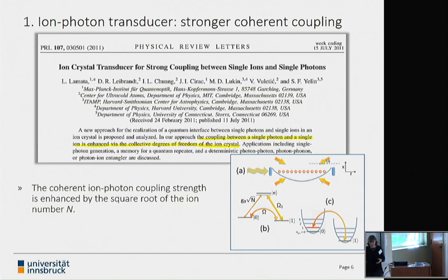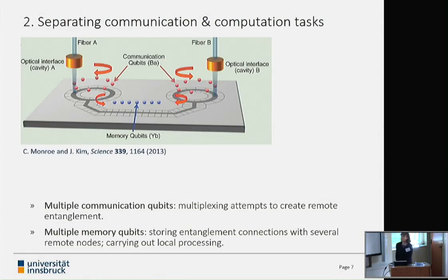One reason you would want to enhance this coupling, for example, if you're using the system to generate single photons. There's a paper from Alexei and his group some years ago talking about the maximum efficiency with which you can use such a system to generate these photons. This goes with the cooperativity, which is a function of the coupling strength squared. If you can boost this coupling strength, you can also use this system more efficiently to couple to photons.